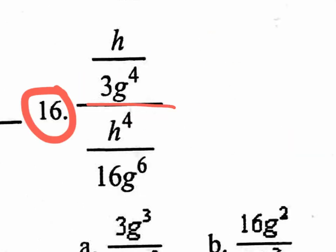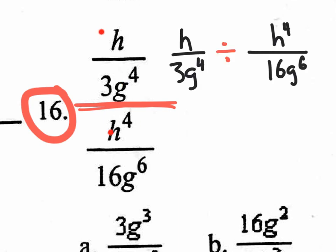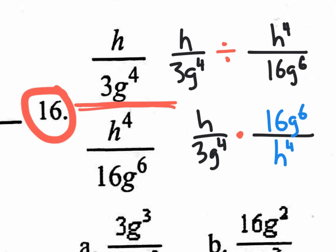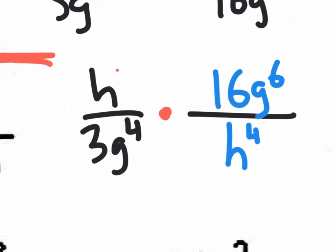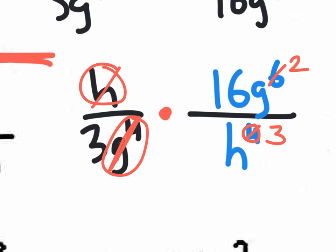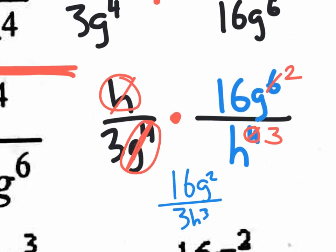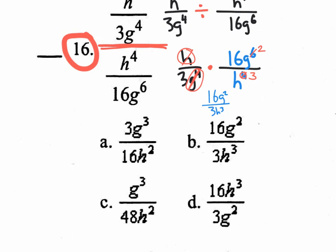Third page, number 16. Just remember: this division bar — if you write it horizontally as division, it's easier. Write it as this divided by this horizontally. Rewrite it down, change the division to multiplication, and flip the second fraction. Since we have nothing but multiplication, just cancel things out. One H on top cancels with one of the H's, leaving three on the bottom. Four G's on the bottom cancel with four of the G's on top, leaving two G's up on top. You can't reduce 3 and 16. Final answer: 16G² over 3H³, which is option B.